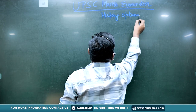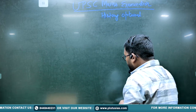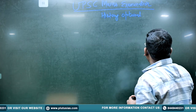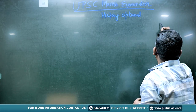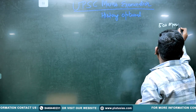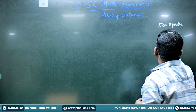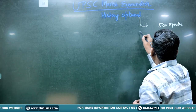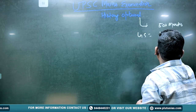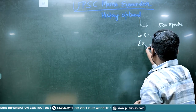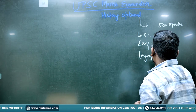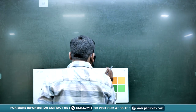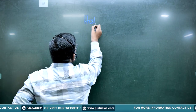In the UPSC Mains examination, the optional paper has 500 marks, and GS papers carry 1000 marks. The essay paper carries 250 marks, and there are also language and other important papers. Let us discuss in detail what is the total weightage in the history optional.